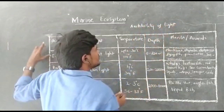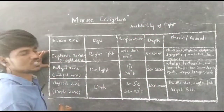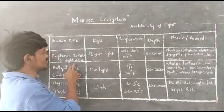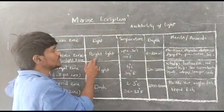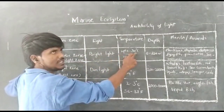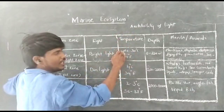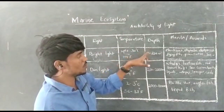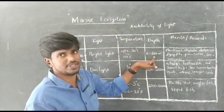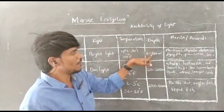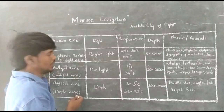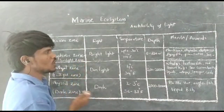The first zone is the euphotic zone, or sunlight zone. The name itself indicates that enough or adequate sunlight is present in this zone. The temperature ranges from 1 degree centigrade up to 30 degrees centigrade in this zone. The depth of this zone is from the surface of the sea water or ocean water down to a depth of 200 meters. This is the euphotic zone.